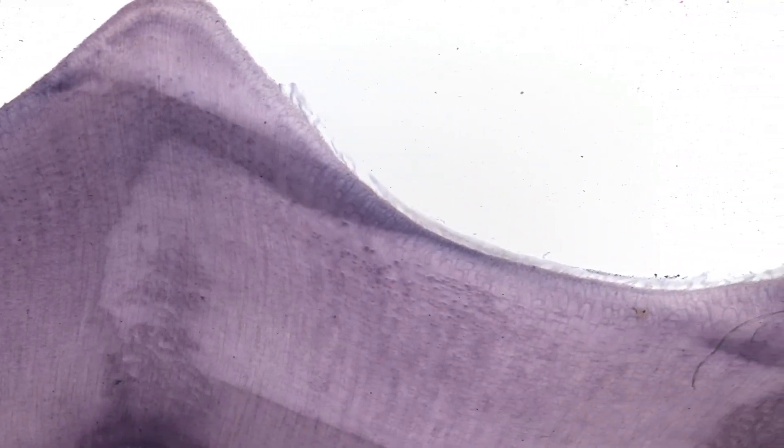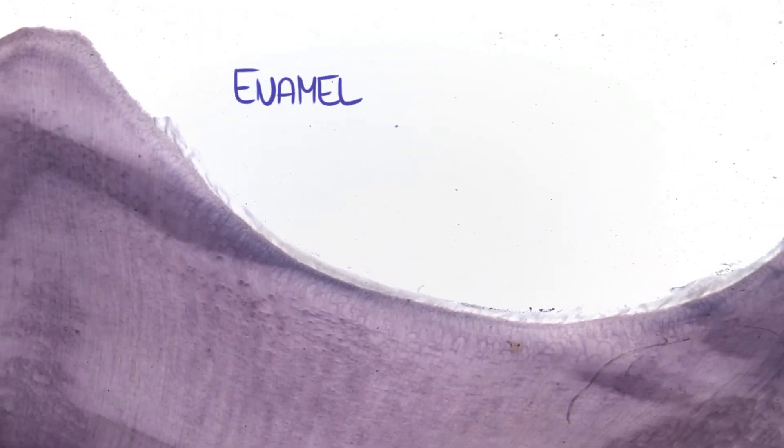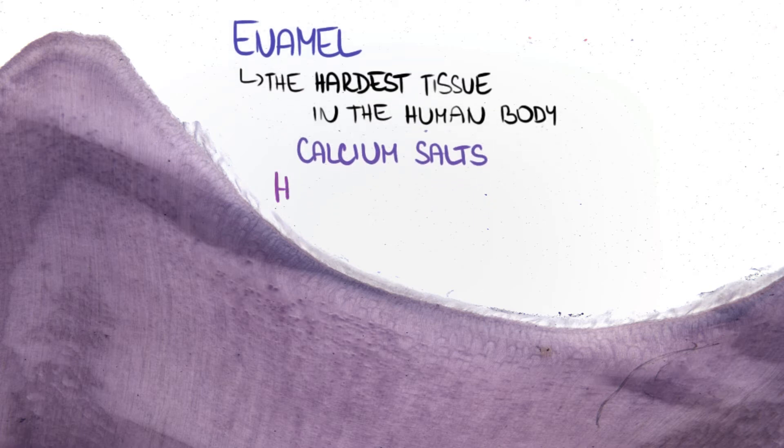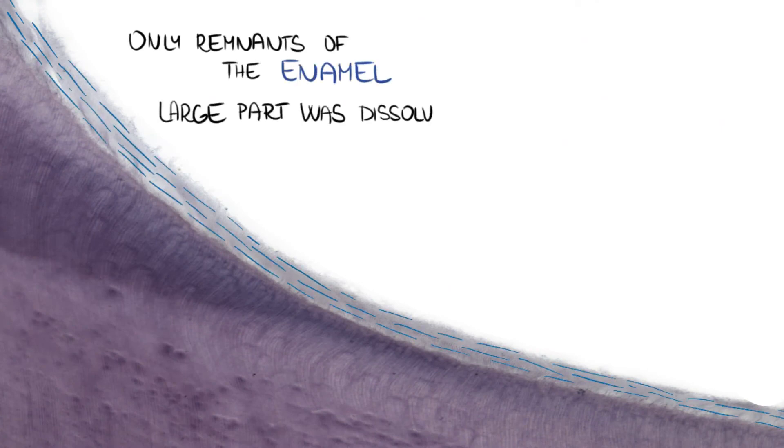Above the dentin in the region of tooth crown, there is enamel. It's the hardest tissue in the human body and consists mostly of calcium salts, especially hydroxyapatite. In the picture you can only see remnants of enamel because a large part of it was dissolved during the preparation of the slide.